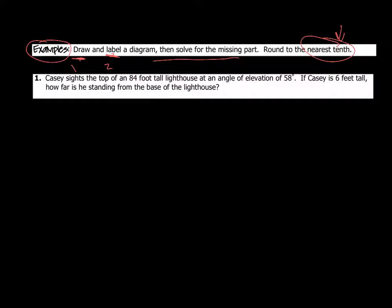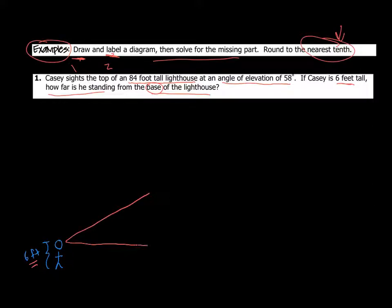So our first problem: Casey sights the top of an 84-foot tall lighthouse at an angle of elevation of 58 degrees. Casey's six feet tall. How far is he standing from the base of the lighthouse? So we've got to draw a picture. Our picture is going to start with Casey, who is six feet tall, and you have this line of sight and this horizontal line — so you have this triangle. What we're looking for is the horizontal distance, so I'm going to label that as x feet. How far is he standing from the base of the lighthouse?